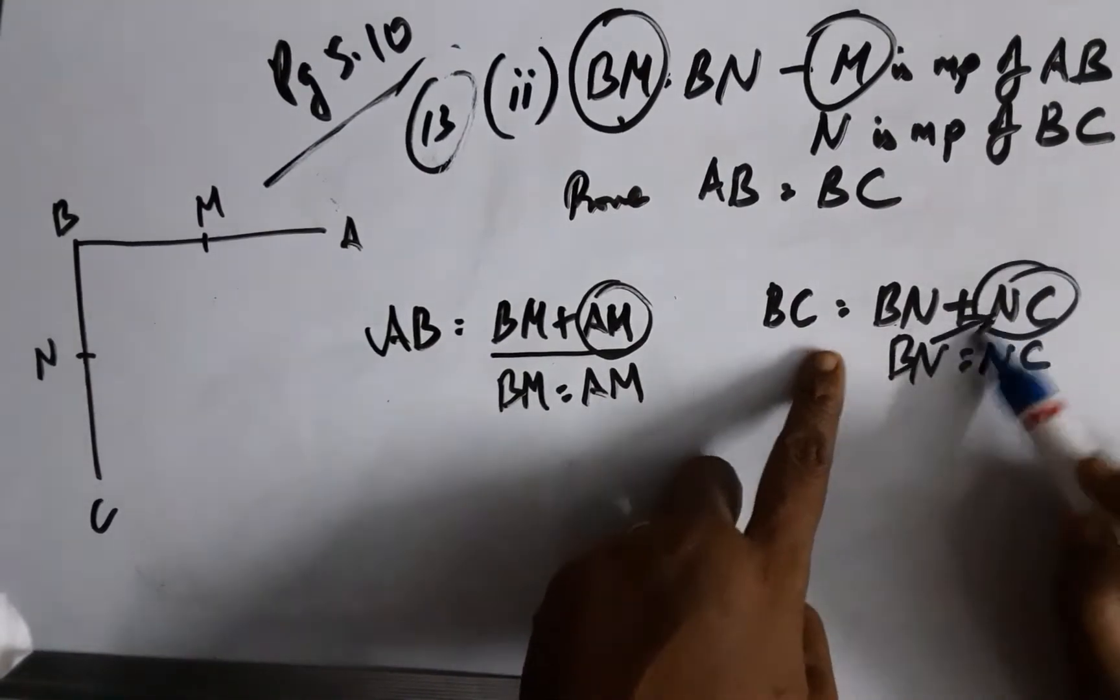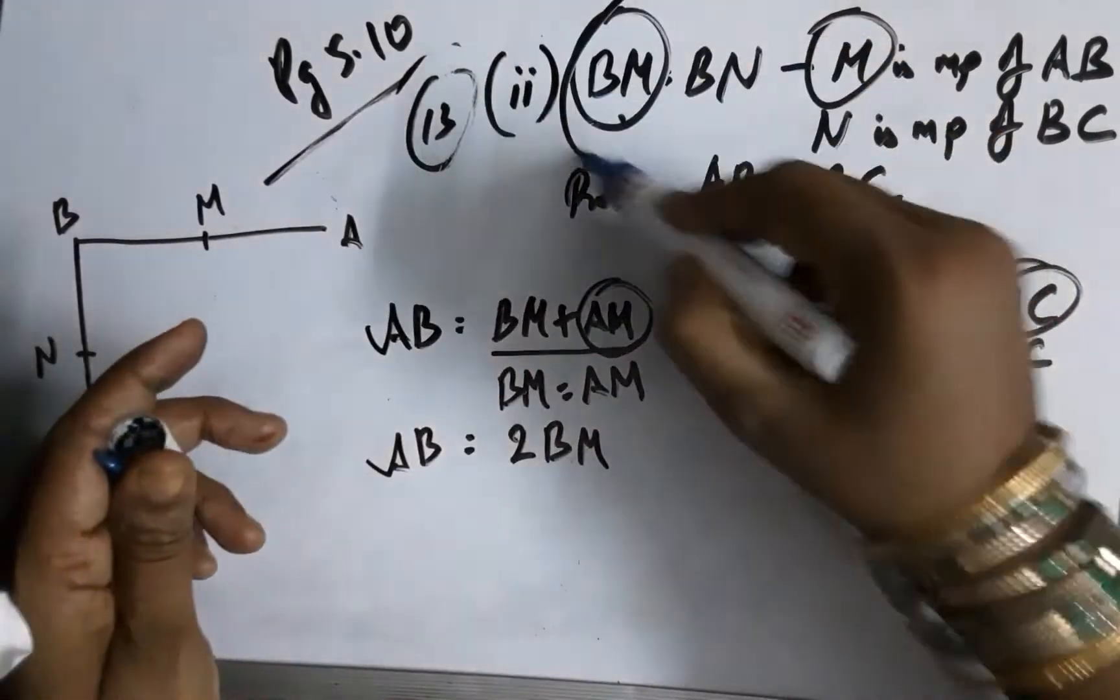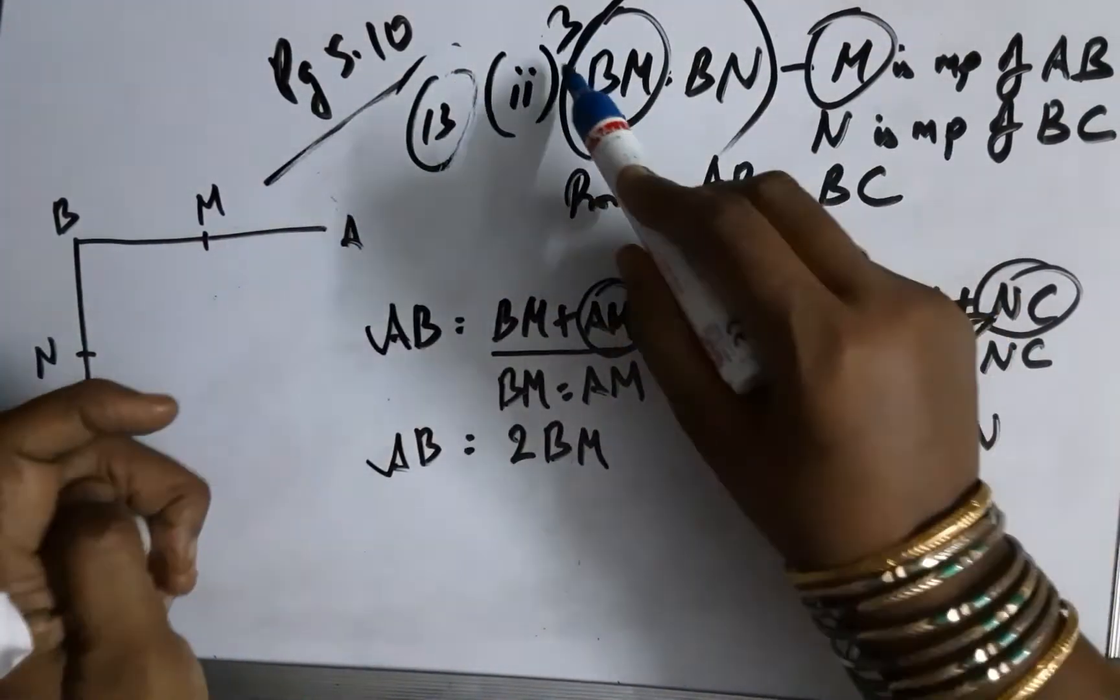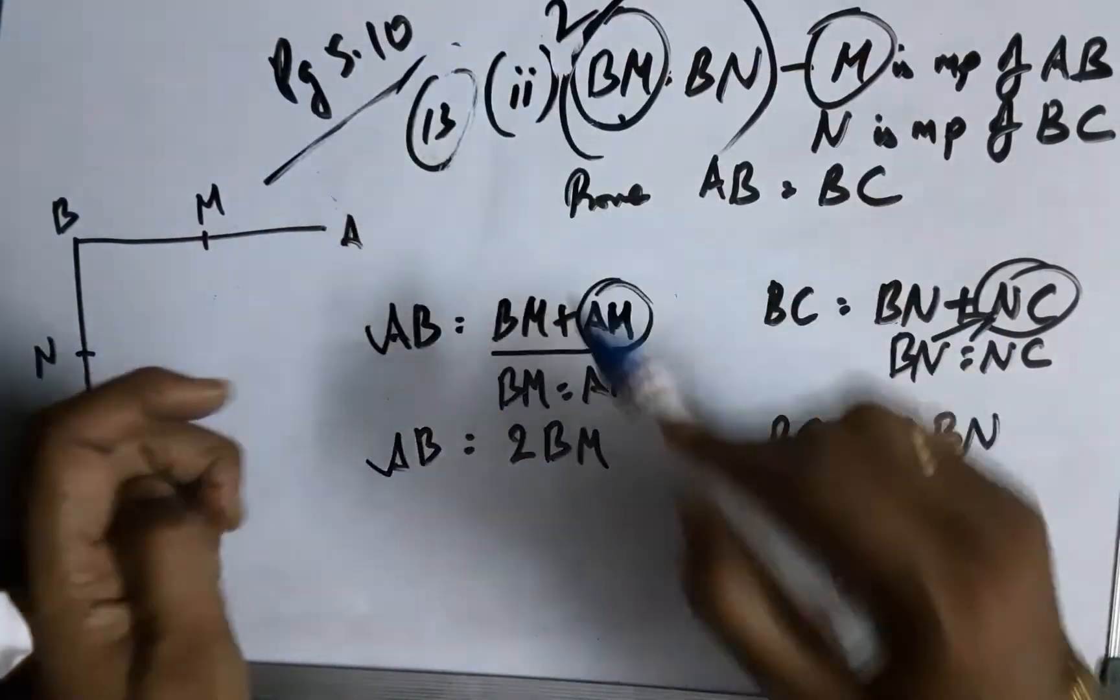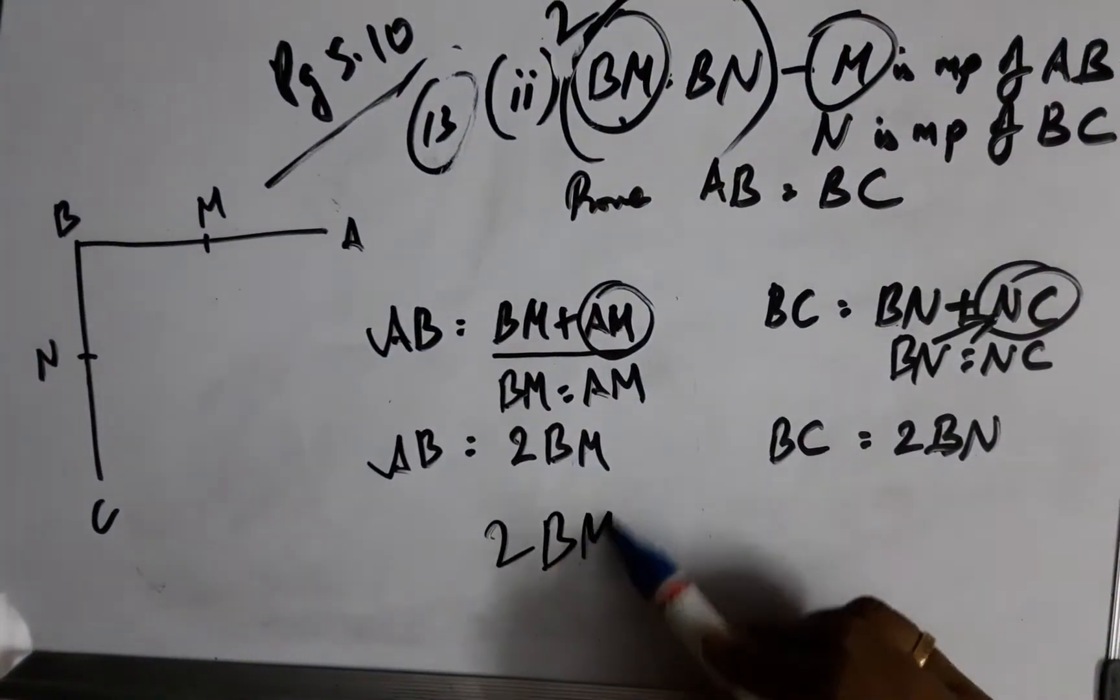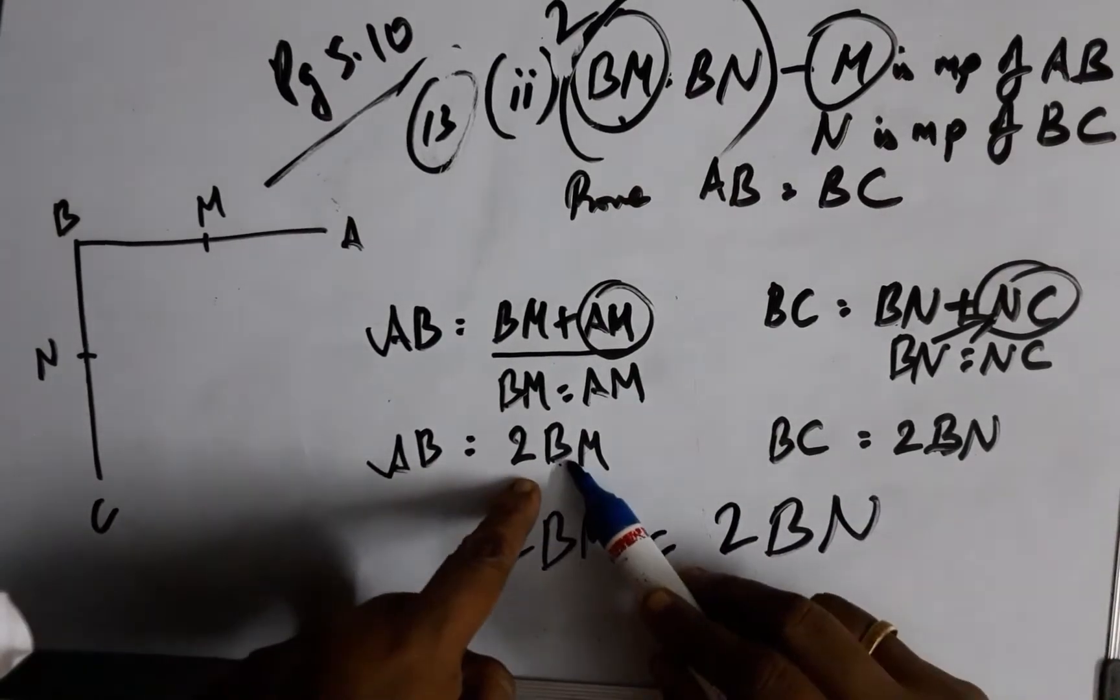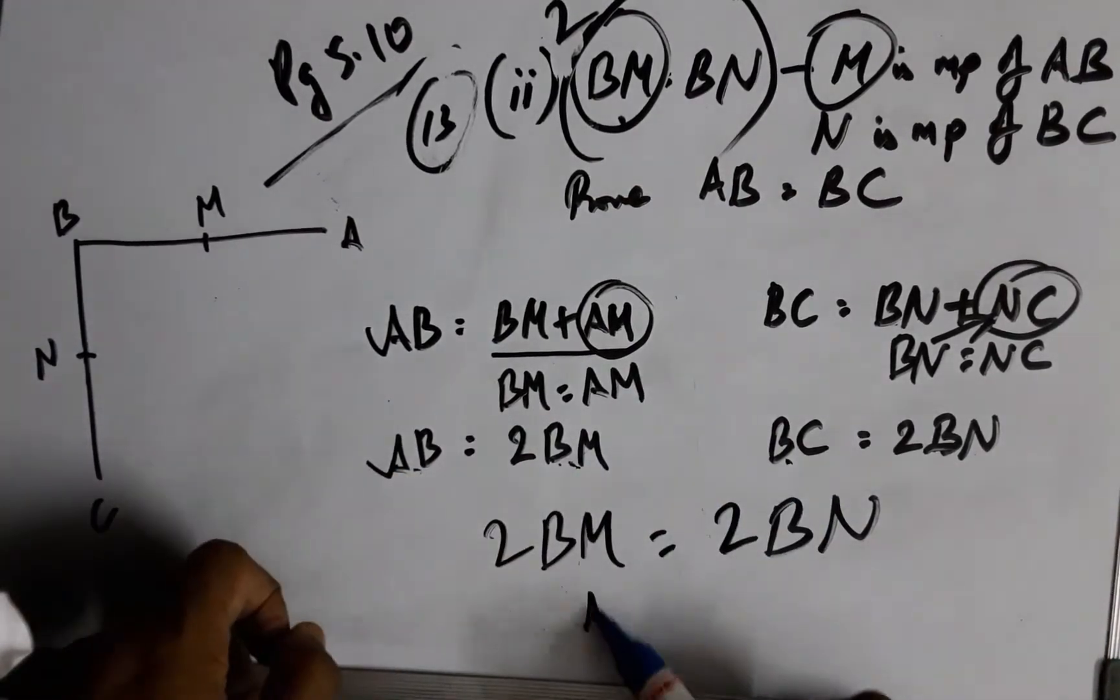Now this component has been given and if I double it, things which are double of the same thing will be equal to one another. Hence, I have AB equals BC.